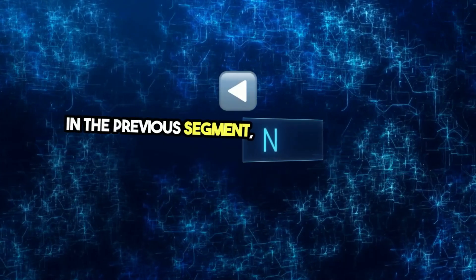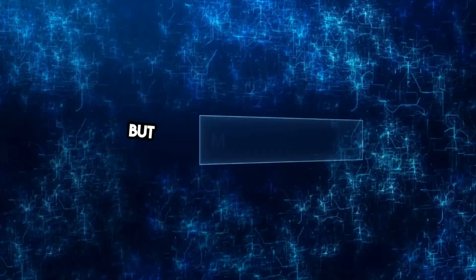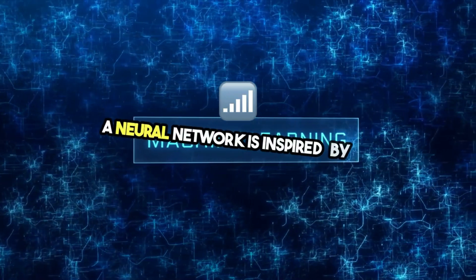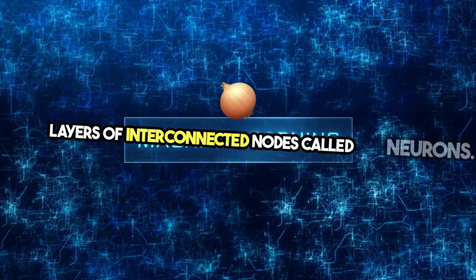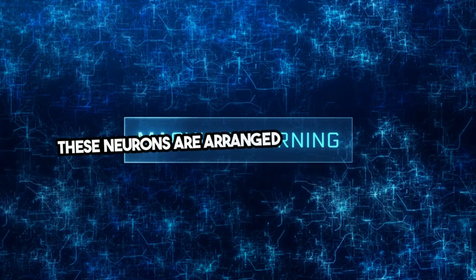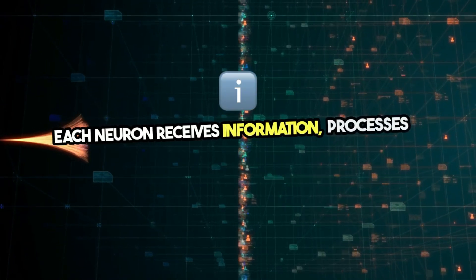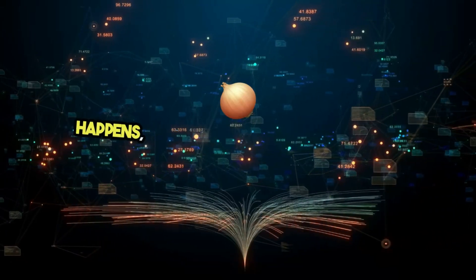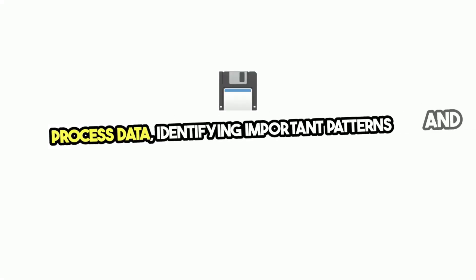In the previous segment, we touched on deep learning and its use of neural networks to process complex data. But what exactly is a neural network, and how does it work? A neural network is inspired by the structure of the human brain, consisting of layers of interconnected nodes called neurons. These neurons are arranged in layers: the input layer, the hidden layers, and the output layer. Each neuron receives information, processes it, and passes it on to the next layer. The hidden layers are where the magic happens, as these layers break down and process data, identifying important patterns and features.